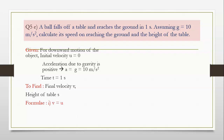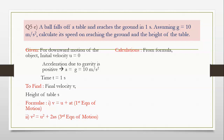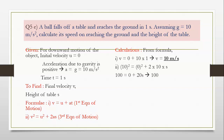The first formula is v is equal to u plus at — the first equation of motion. The second is v square is equal to u square plus 2as — the third equation of motion. Calculations: v is equal to 0 plus 10 into 1, so v is equal to 10 meter per second. For height: 10 square is equal to 0 square plus 2 into 10 into s, giving 100 is equal to 20s. Therefore s is equal to 100 divided by 20, which is 5 meters.